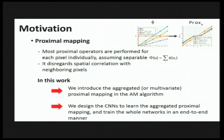In this work, we introduce a powerful aggregative proximal mapping operator in our alternating minimization, and we design a CNN to model this and train the whole network in an end-to-end manner.